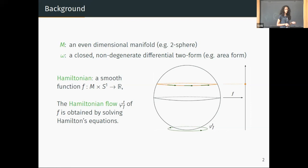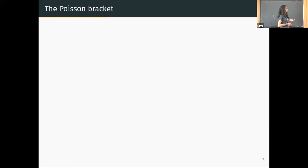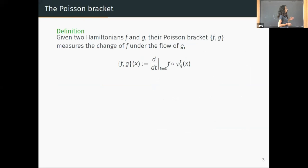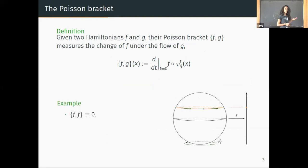Now given two such functions, we can consider their Poisson bracket. This operation basically measures how one Hamiltonian changes with respect to the flow of another. Formally, we define the Poisson bracket {f,g} by composing f on the flow of g and taking the derivative with respect to time. Some examples: the Poisson bracket of a function with itself is always zero—this is basically the energy conservation law.